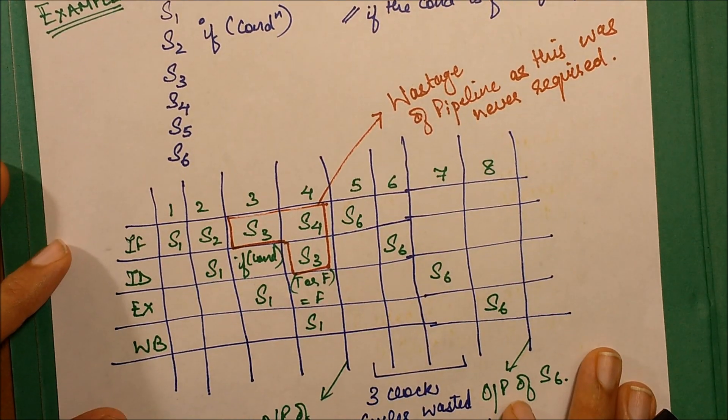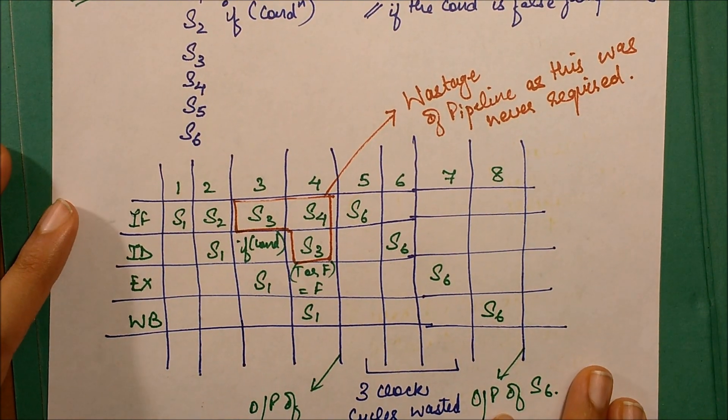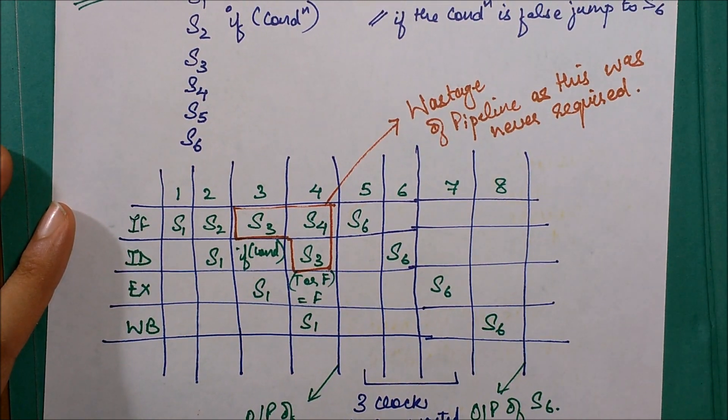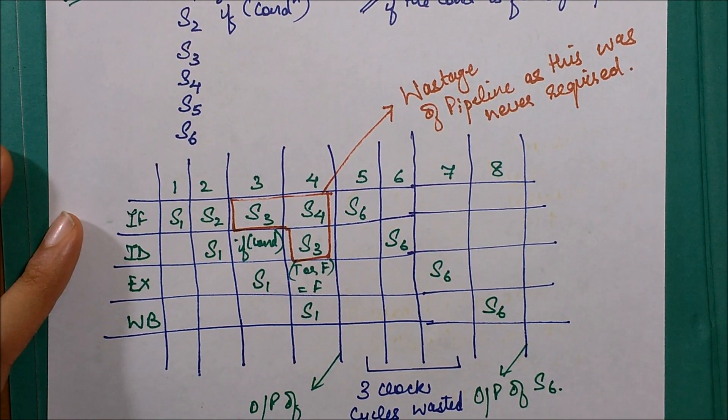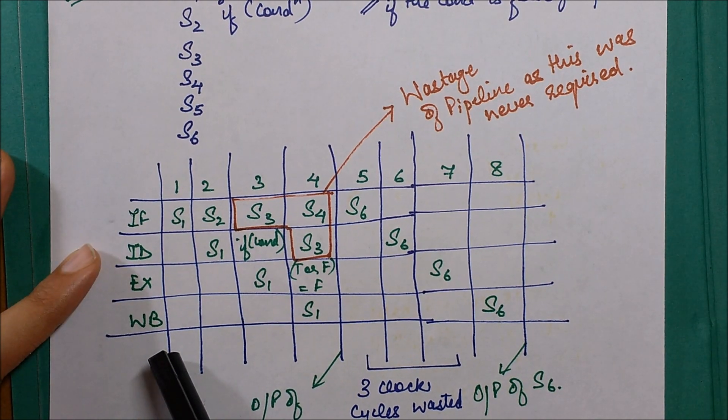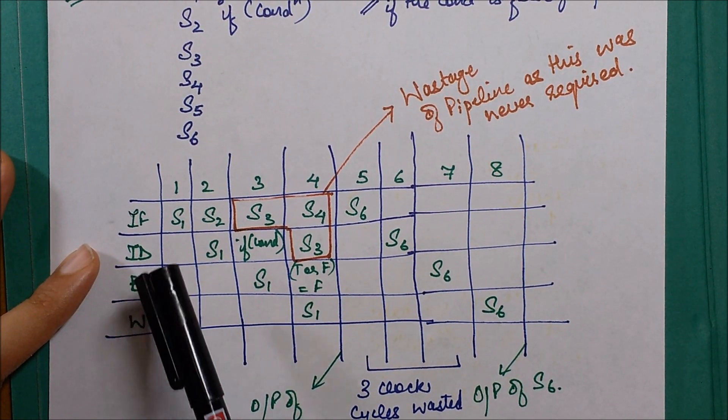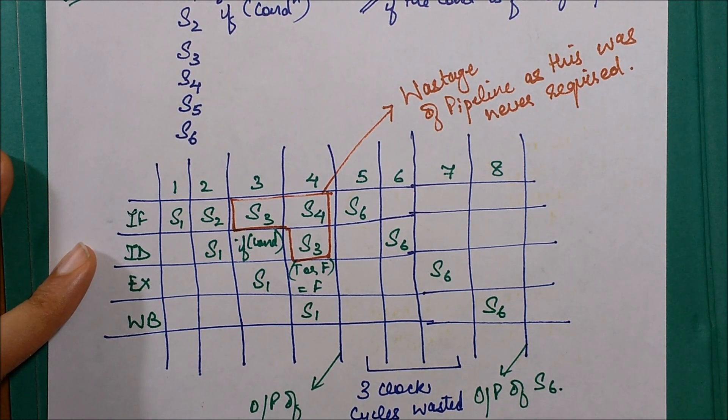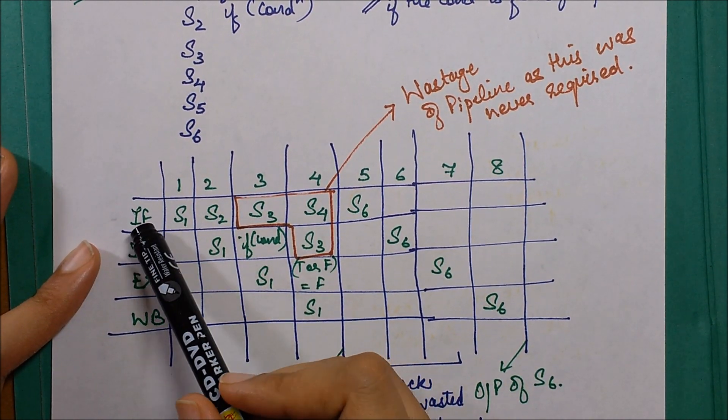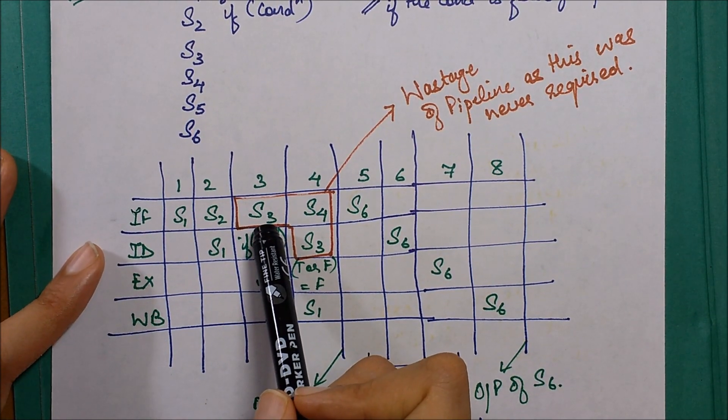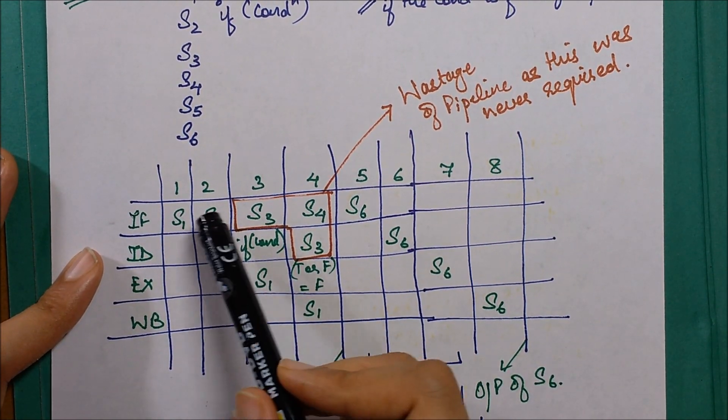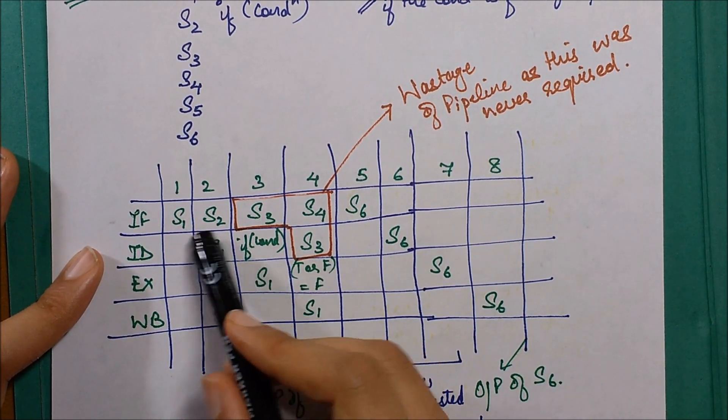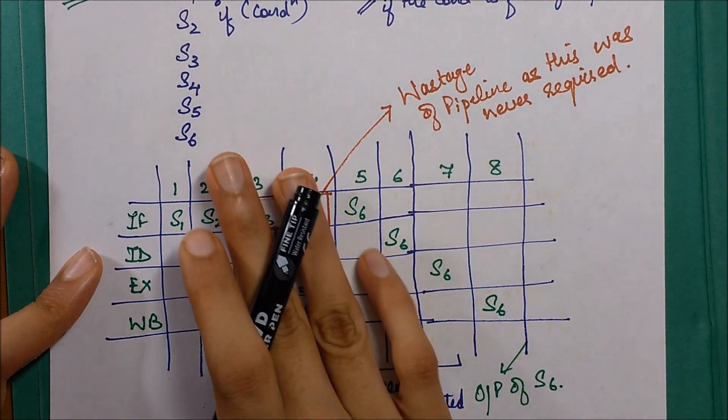This is very simple. We construct its instruction table with four phases over here: IF, ID, EX, WB. Instruction fetch, instruction decode and operand fetch are combined into this phase. In the first phase we start fetching the instructions one by one, so we add the instructions over here: S1, S2, S3, S4, S5, S6.